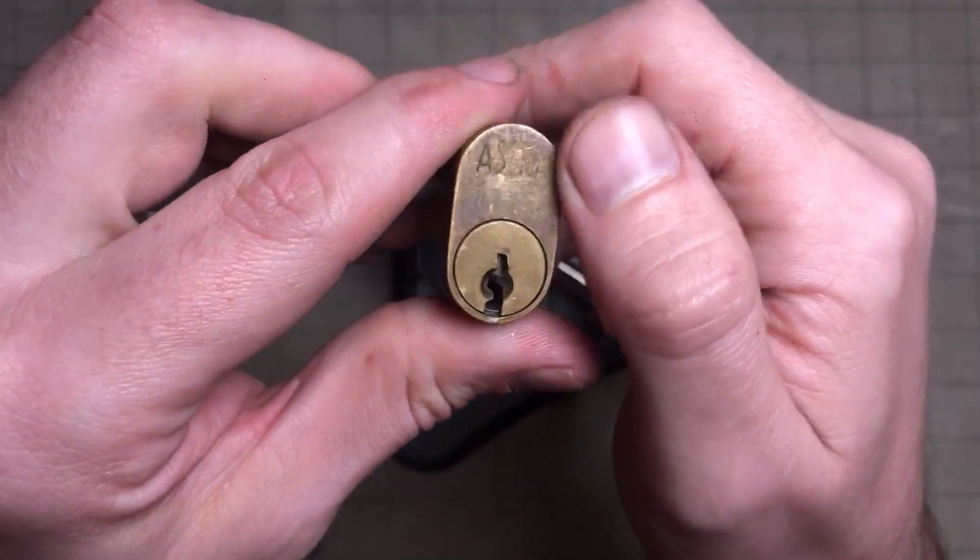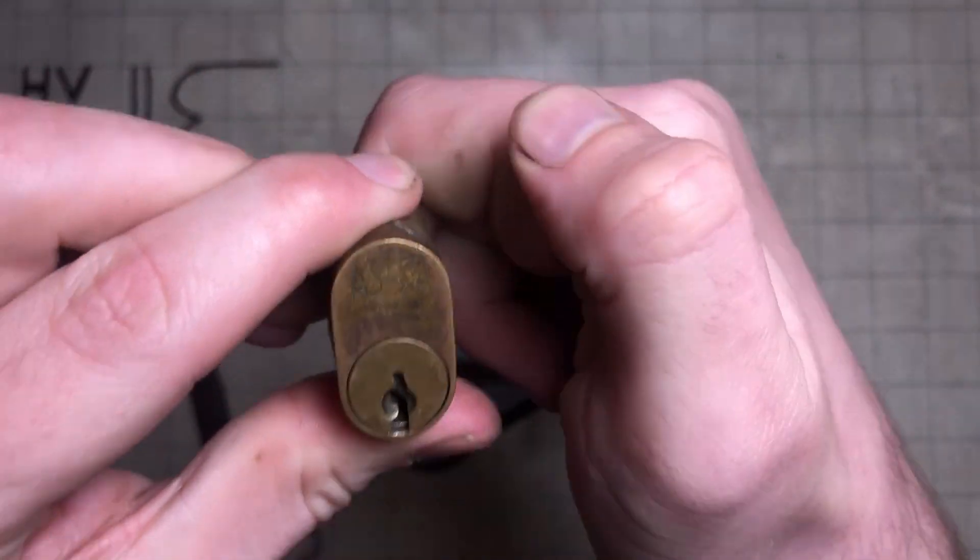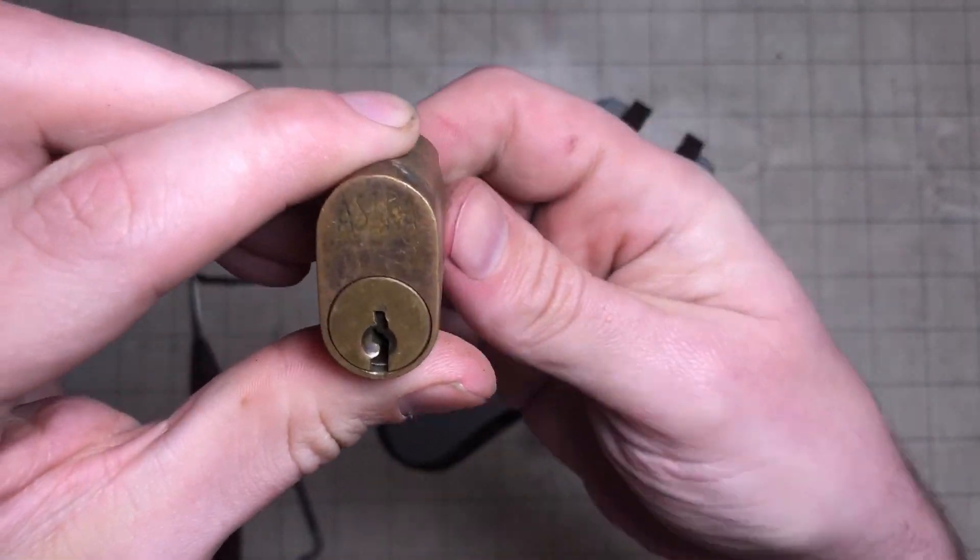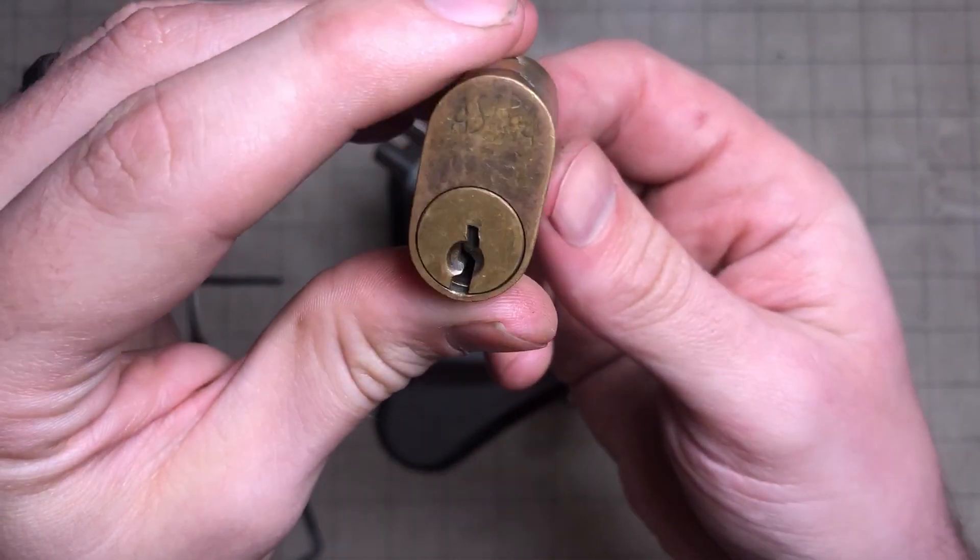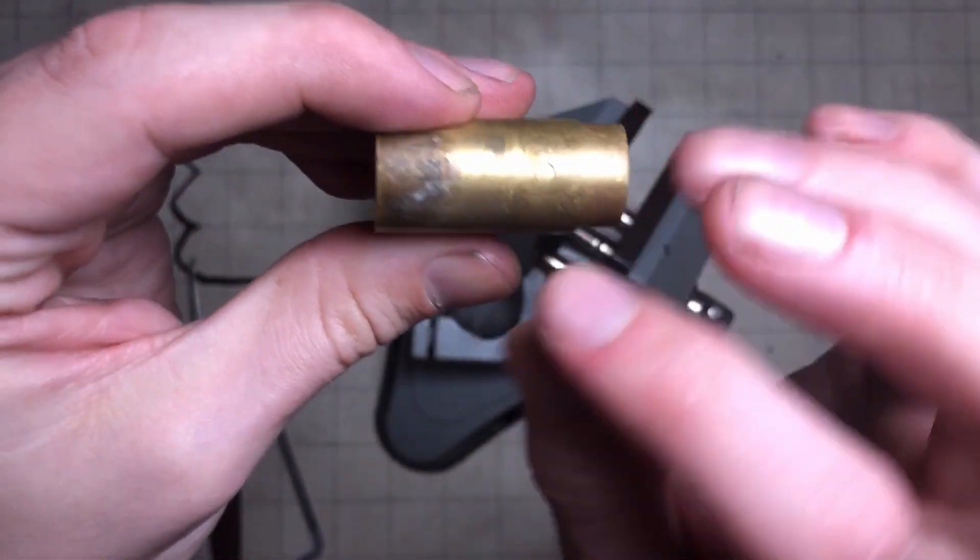All right, so I have this Astrolok. You can see it's been pretty well-worn, a bit of a bendy keyway, like a sort of Yale style twist.